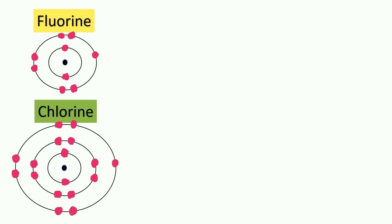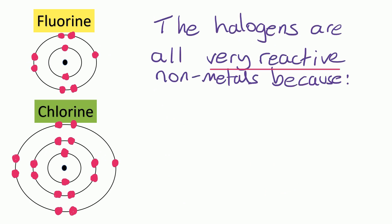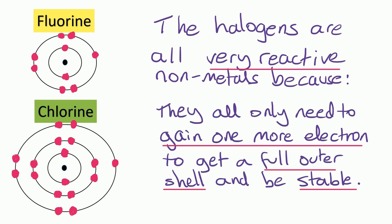The first thing to note about the reactivity of the halogens is they are all very reactive non-metals. And we can explain this by looking at their electronic structures. So I've drawn the electronic structures of the first two, fluorine at the top of the group and chlorine underneath it. And we can see that they all only need to gain one more electron to get a full outer shell and be stable. And it's quite easy to find an extra electron rather than trying to find two or three more electrons. So that explains why the halogens are all very reactive.